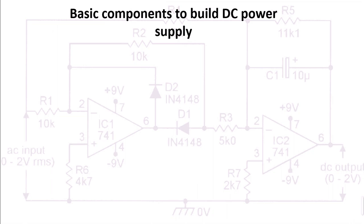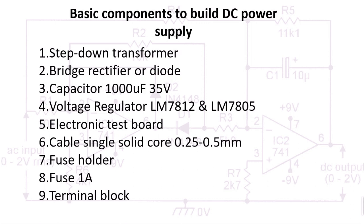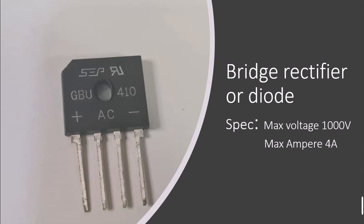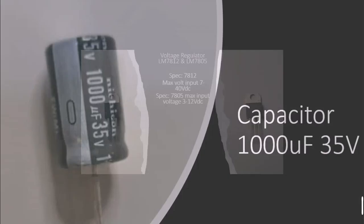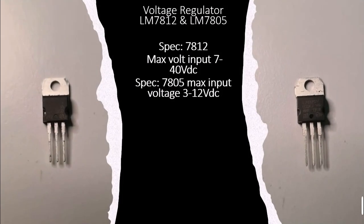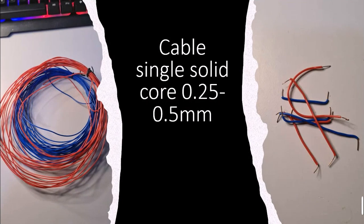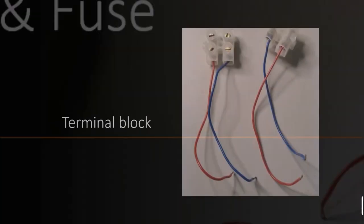Basic components to build a DC power supply. In this video, part one only covers a bench test on the AC to DC circuit. Components needed: step-down transformer, bridge rectifier or diodes, capacitor 1000 µF 35V, voltage regulators LM7812 and LM7805, electronic test board, cable single solid core 0.25 to 0.5 square millimeter, fuse holder and fuse 1 amp, and terminal block.